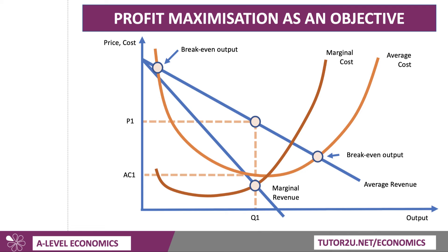That gap between price and cost is the profit margin — the profit per unit — multiplied by output. And so this shaded green area is the total profit. The total profit is shown by the green shaded area.